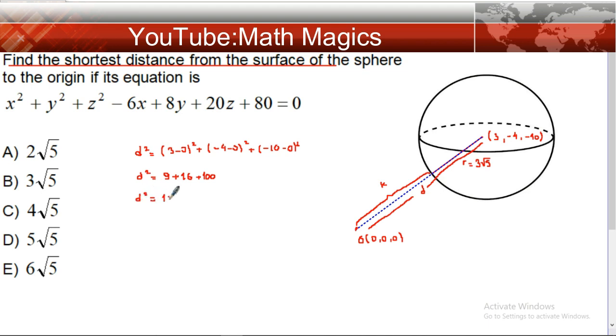This equals √125, and d = 5√5. So the distance from origin to center is 5√5. To get k, we subtract 3√5 from 5√5.